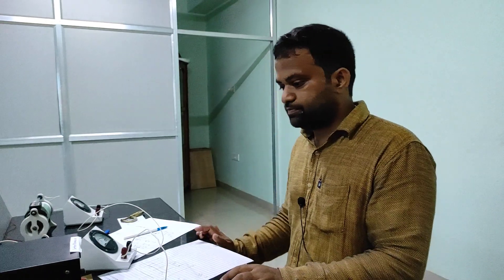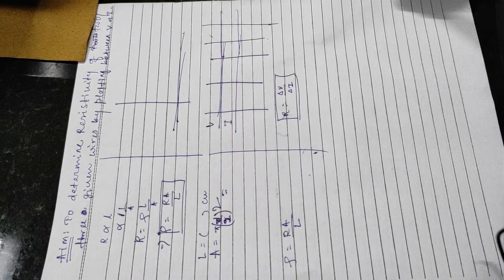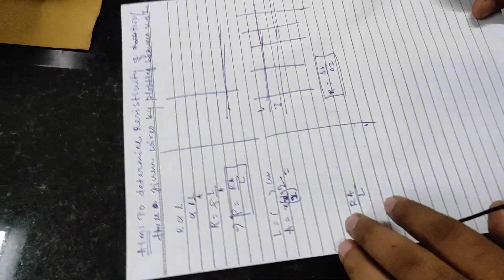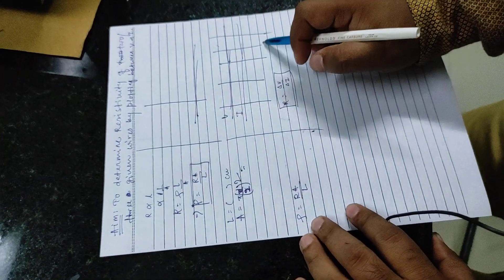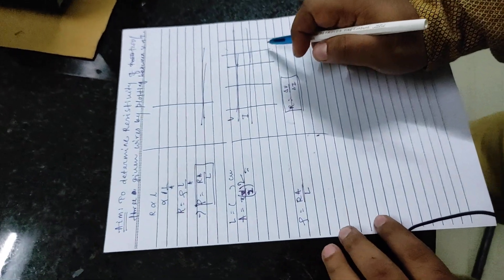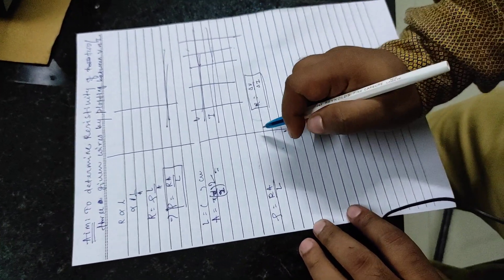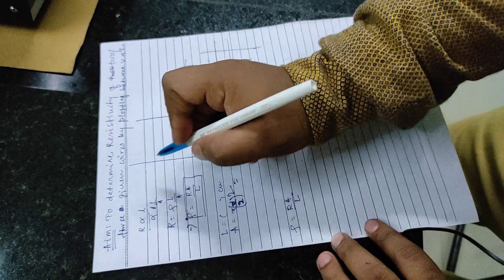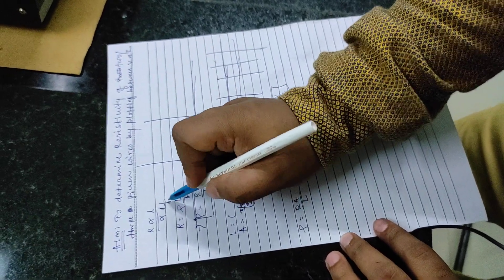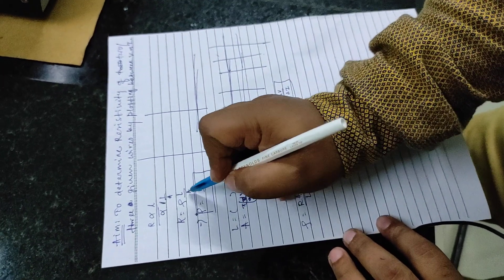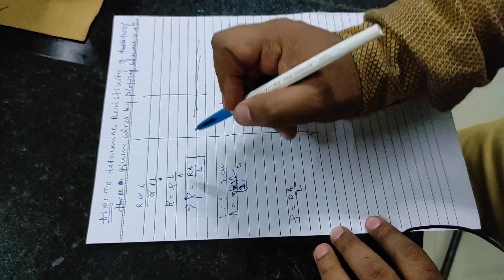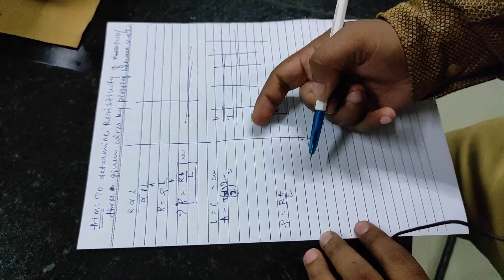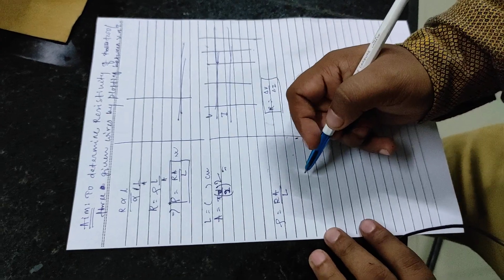Let us come to the experiment part. The title is: to determine the resistivity of two or three given wires by plotting the graph. From Ohm's law, R is proportional to L and R is also proportional to one upon area, so R equals rho times L by A, and rho equals R times A upon L. This is the formula we are going to use.